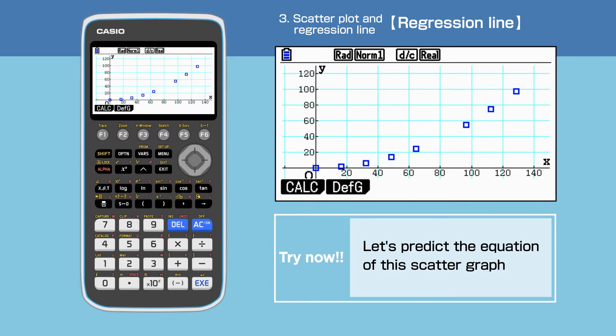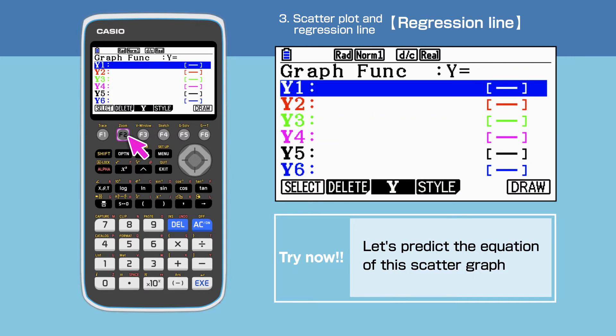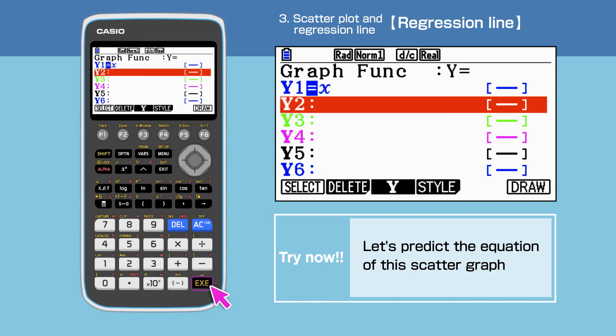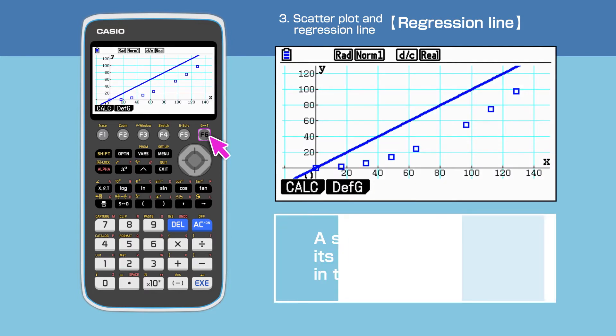For the first attempt, we try Y equals X. The equation can be entered by pressing F2. Enter Y1 equals X, then press F6 to draw. The blue line graph has the equation Y equals X.